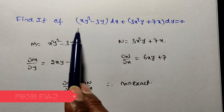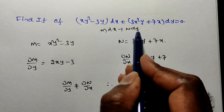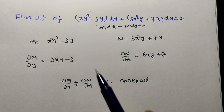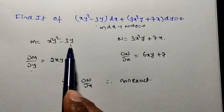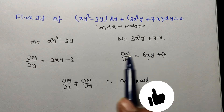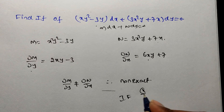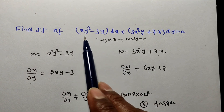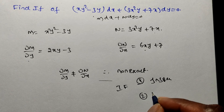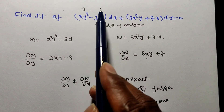Second problem: find the integrating factor of (xy² - 3y) dx + (3x²y + 7x) dy = 0. This is in the form M dx + N dy = 0. Finding ∂M/∂y: xy²·derivative is 2xy, and -3y·derivative is -3. Finding ∂N/∂x: 3x²y·derivative is 6xy, and 7x·derivative is 7. Since ∂M/∂y ≠ ∂N/∂x, the equation is non-exact.